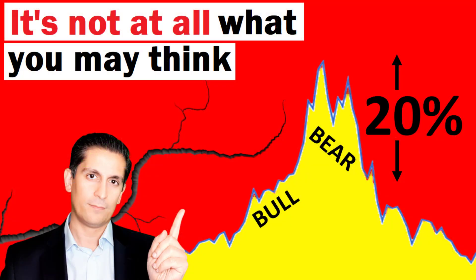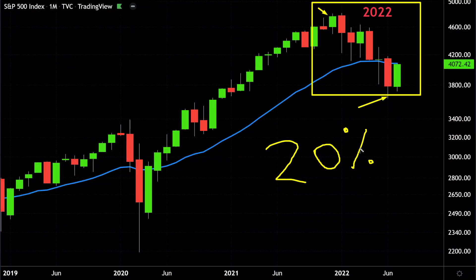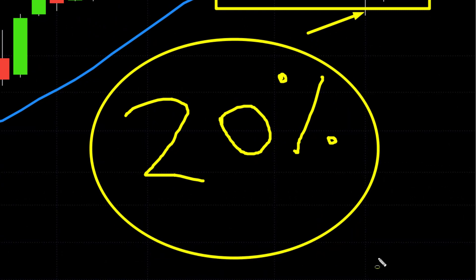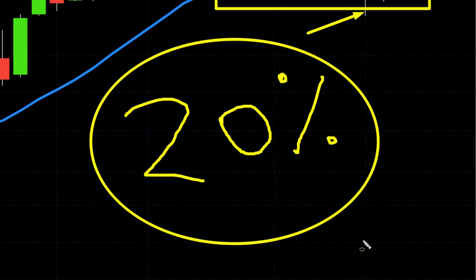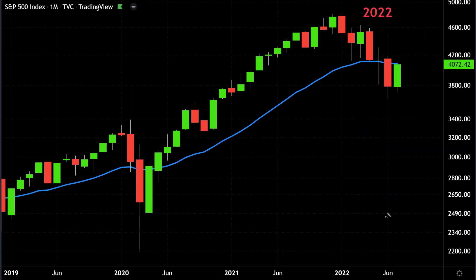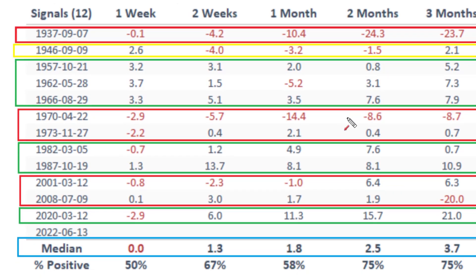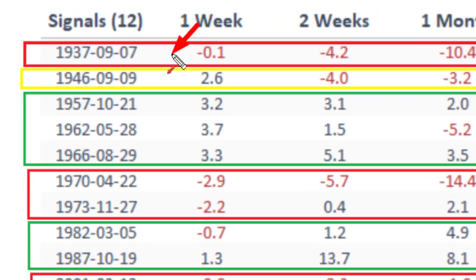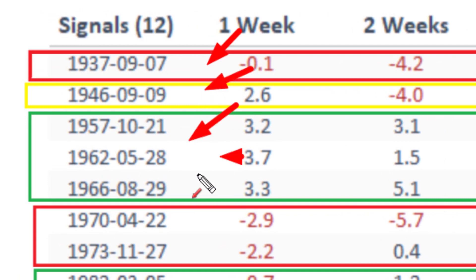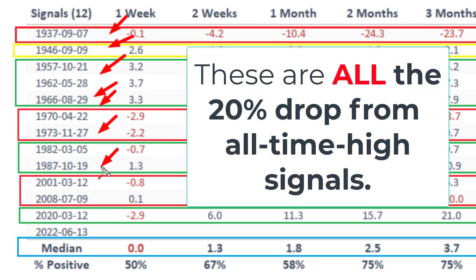Well, here's the thing. If you watched my previous video about this, I explained that firstly, this 20% rule is very arbitrary — it's just a number, 20%. Also, something much more important: the percentage returns going forward every time the market drops by 20% from its all-time highs. Here are the forward returns. I explained this in much more detail in that previous video.